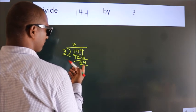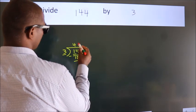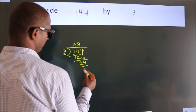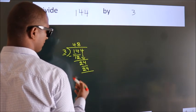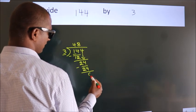When do we get 24? In 3 table. 3 eights, 24. Now we subtract. We get 0.